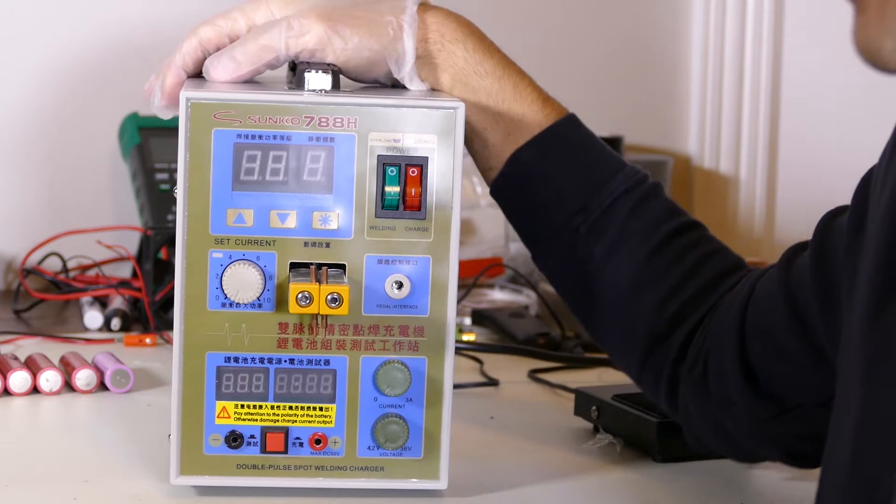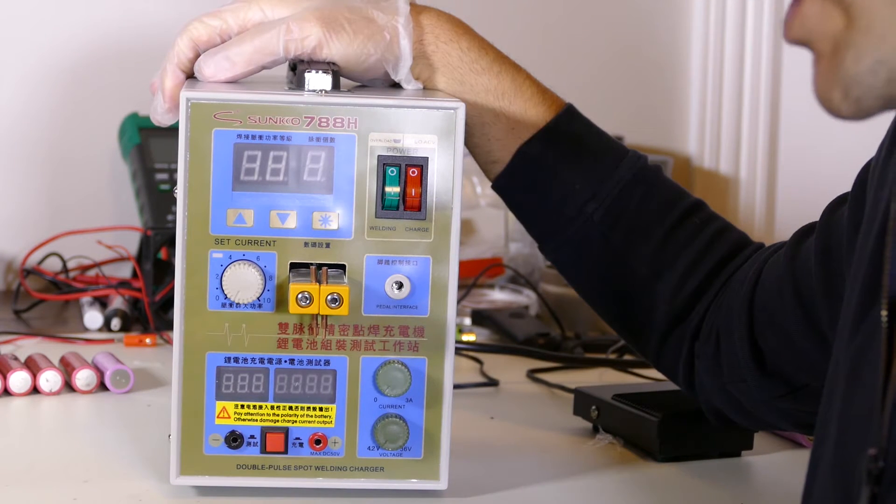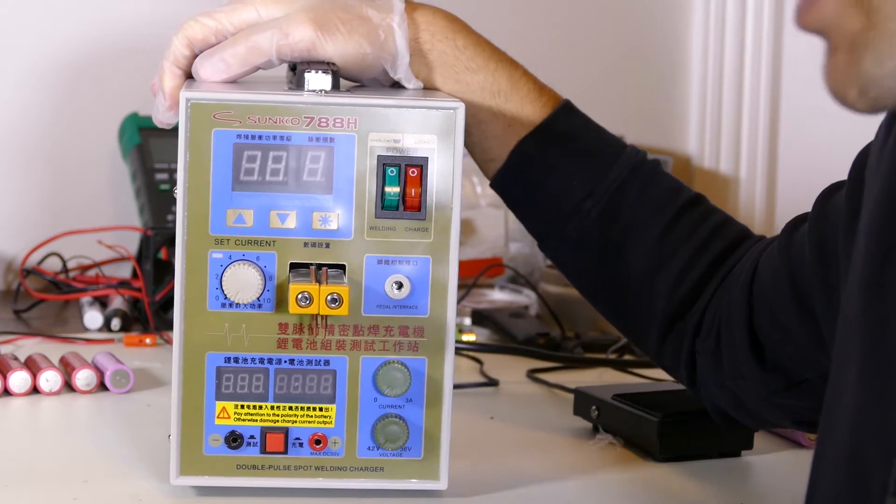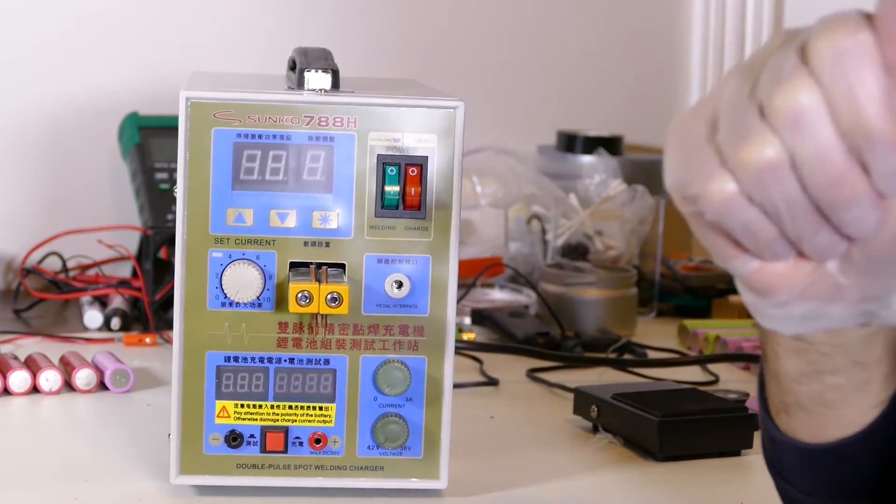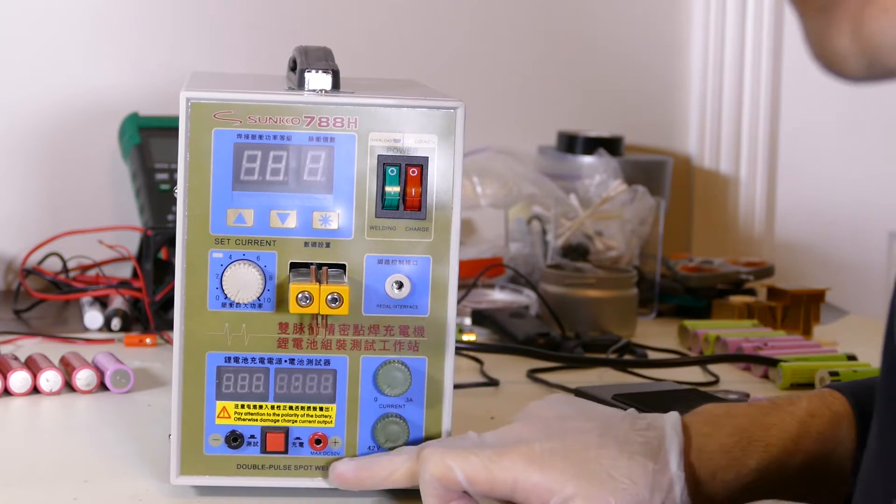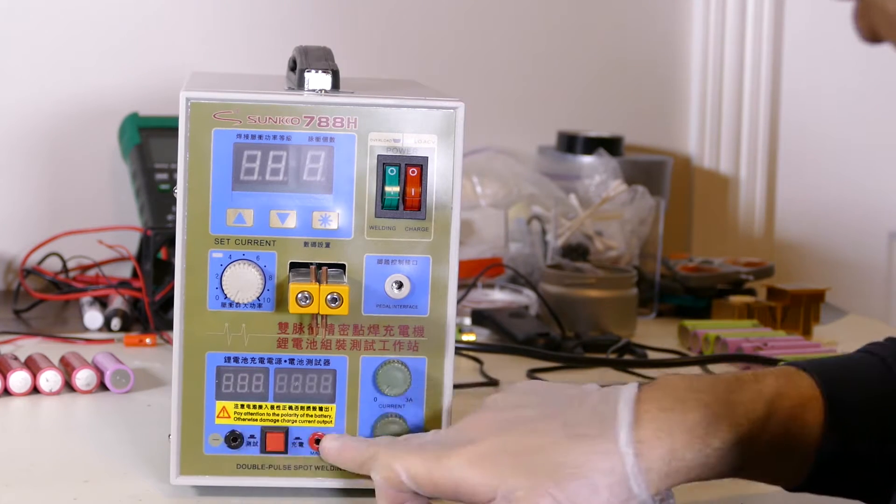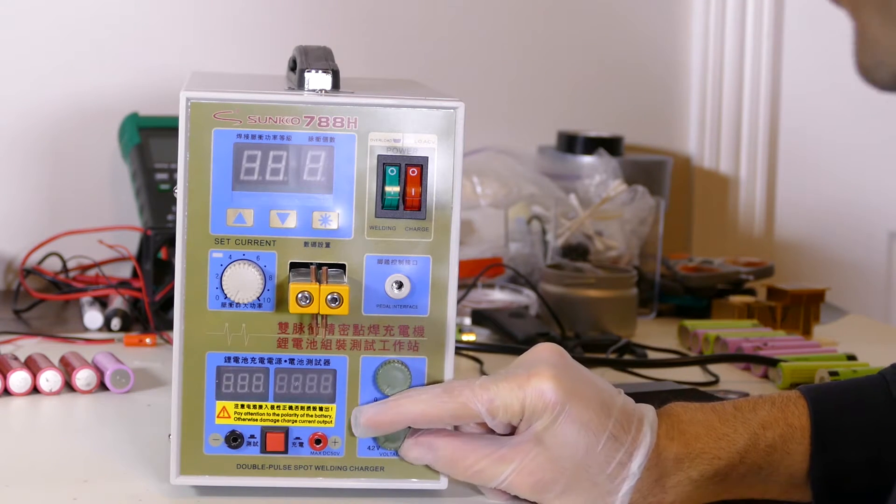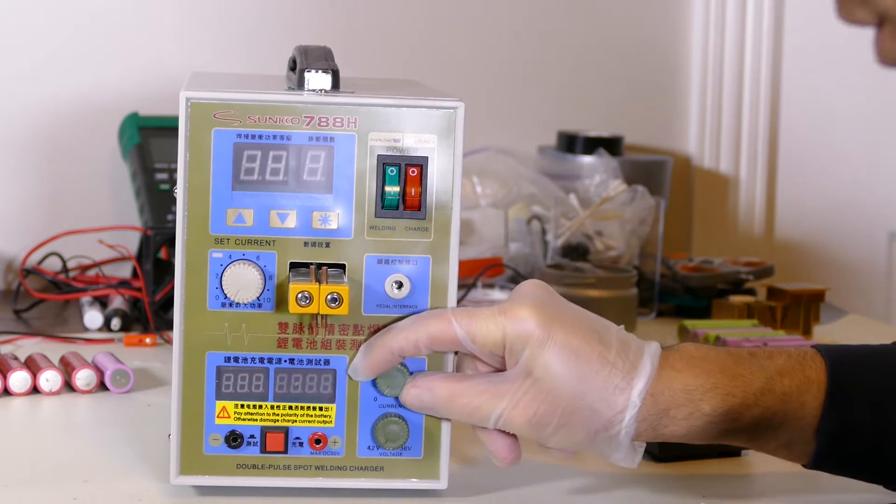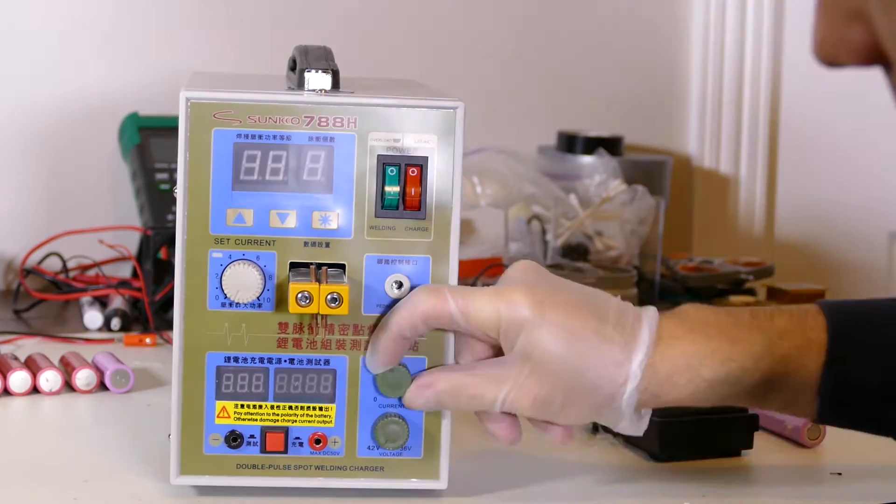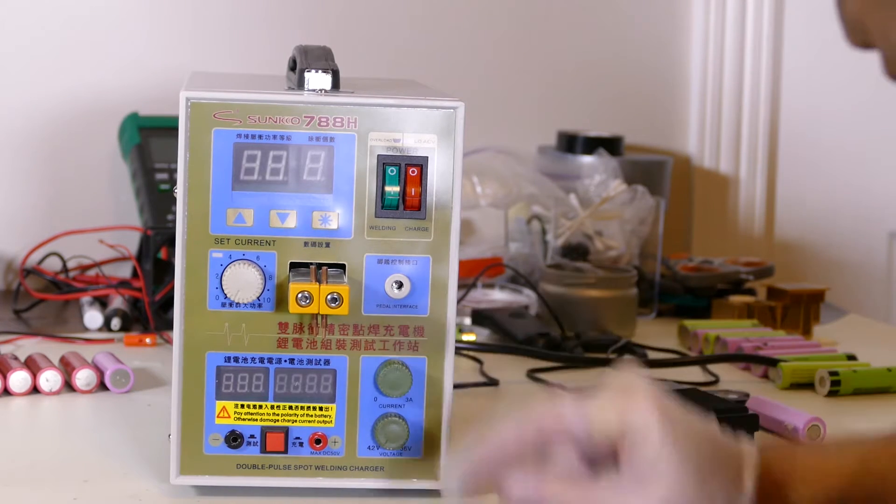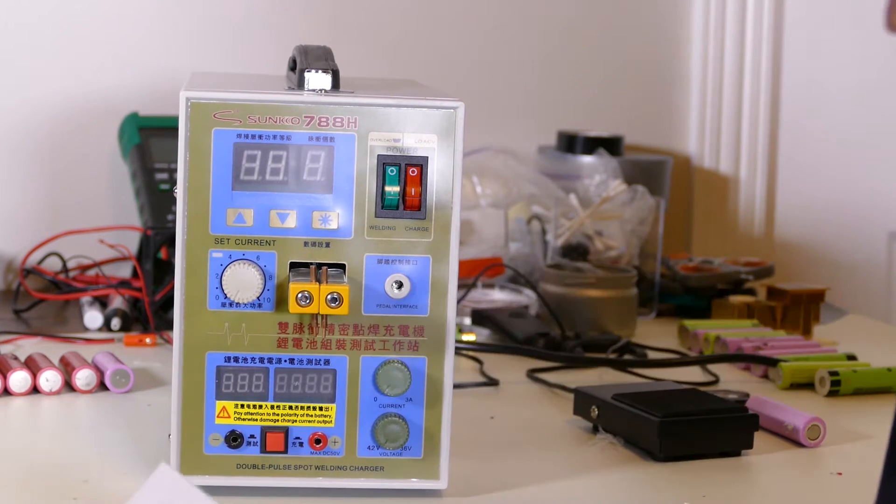It's a 110 or 220 input. The current rating is from 2 amps to 15 amps. The welding current is 50 amps to 800 amps, and pulse times are 1 millisecond to 19 milliseconds. The charging part goes from 4.2 volts to 36 volts, and the charging current goes from 0 to 3, but I'm not sure because 0 starts here and 3 is here. It weighs 3.4 kilograms.